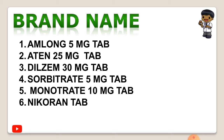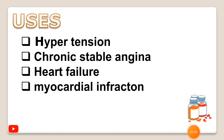Some brand name tablets include: atenolol 25 mg tablets, diltiazem 30 mg, isosorbide dinitrate 5 mg, isosorbide mononitrate 10 mg. These are the current tablets available in anti-anginal drugs used in the treatment of angina and chest pain.